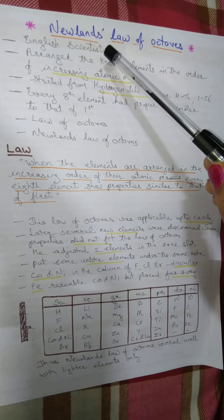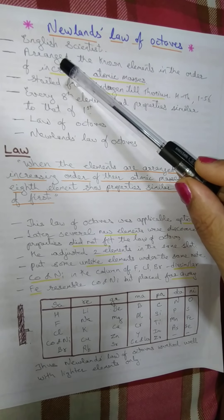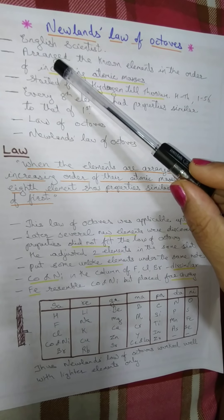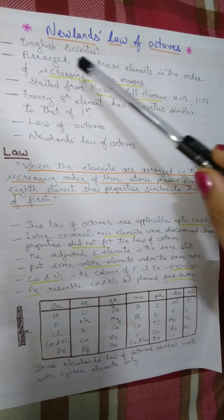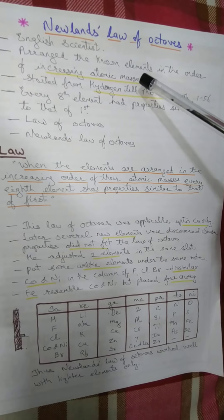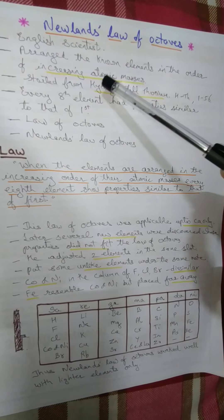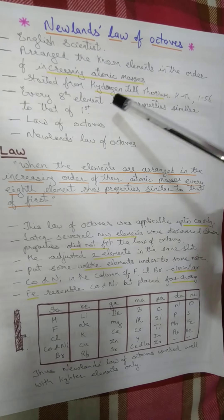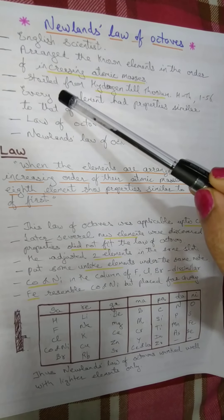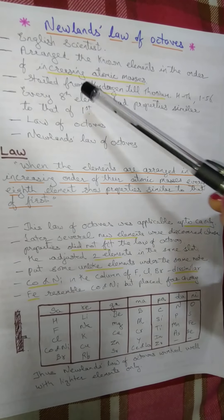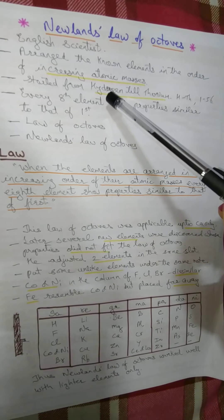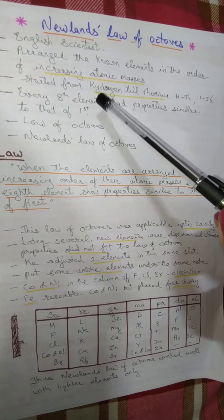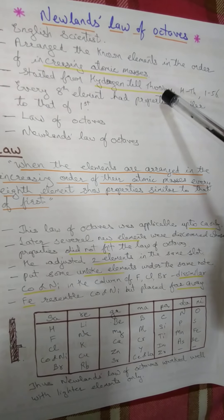Newland was an English scientist. He has seen the study of Dobereiner and the same things he has followed, that is he arranged the known elements at his time in the order of increasing atomic masses. At the time of Newland, 56 elements were known and he arranged all those 56 elements starting from smallest to biggest, that is from hydrogen till thorium.